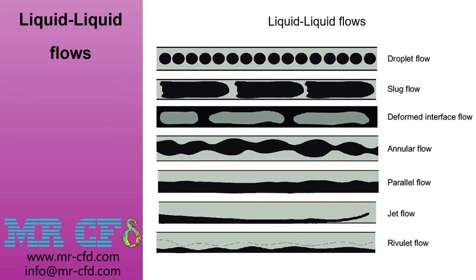After investigating the regimes of gas-liquid multiphase flows, it's time to discuss liquid-liquid flows. This type of flow occurs for two immiscible liquids so that a distinct interface is formed between them. The mass flux of each phase has the determining role in creating different flow patterns in a domain. Another equally important factor is the surface tension between two liquids or phases, which can impact the formation of each pattern with different inflow fluxes.